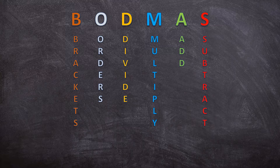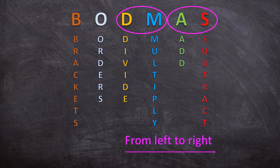When you have division and multiplication together, or when you have addition and subtraction together, you do those from left to right. So it doesn't matter in which order division and multiplication appear — if you have those two, you do them from left to right. The same applies for addition and subtraction.